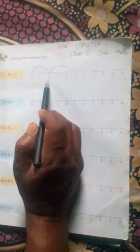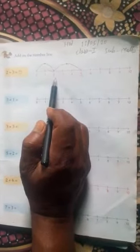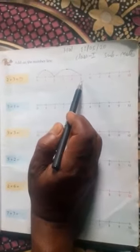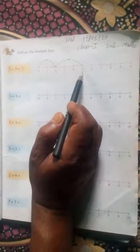Then count 3 more numbers after 2: 1, 2, 3. You will reach 5.